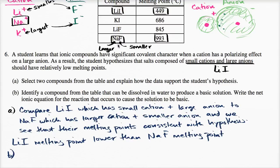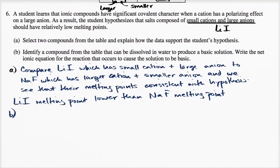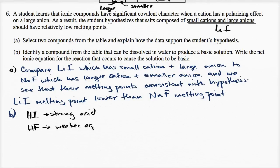The important thing to recognize is that hydroiodic acid (HI) is a strong acid. While hydrofluoric acid is a weaker acid. A strong acid is not going to be good at grabbing hydrogens — in fact, it's a strong acid, it wants to give away its hydrogens really badly. So the iodide does not seem like a good candidate.